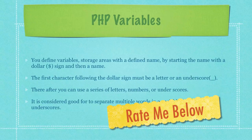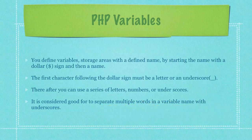You define variables — storage areas with a defined name — by starting the name with a dollar sign and then a name. The first character following the dollar sign must be a letter or an underscore. Thereafter, you can use a series of letters, numbers, or underscores. It is also considered good practice to separate multiple words in a variable name with underscores.